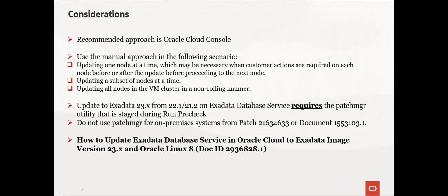Update to Exadata 23.x from 22.x or 21.x on Exadata database service requires the patch manager utility that is staged during run pre-check. Do not use patch manager available for on-premises systems from patch 21634633 or document 155.310.3.1. Read MOS document 2936828.1 thoroughly. The demo after these slides is for reference and may not cover each and every step that might fit in accordance to your environment.